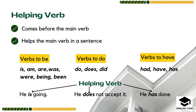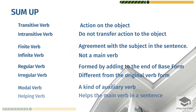So what is a helping verb? Helping verb assists the main verb. For example: 'He is going' — that is to be form. 'He does not accept' — that is to do form. 'He has done' — that is to have form. These helping verbs are actually helping the main verb for the completion of sentences.